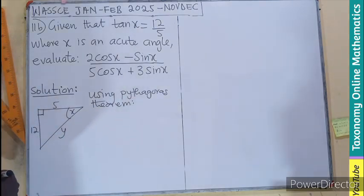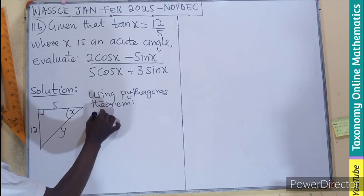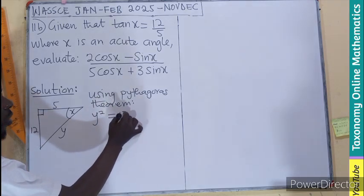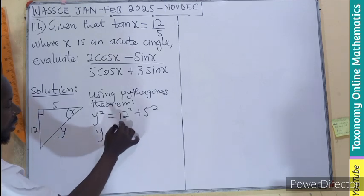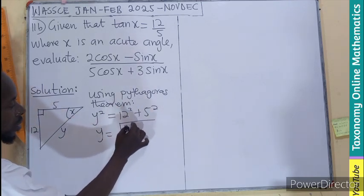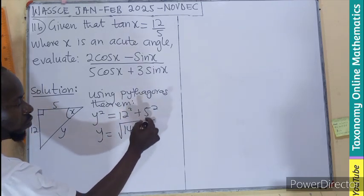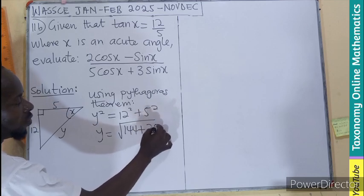So using the Pythagoras theorem, the longest side here is y squared, followed by 12 squared and 5 squared. y would be the square root of 12 squared, 144, 5 squared, 25.